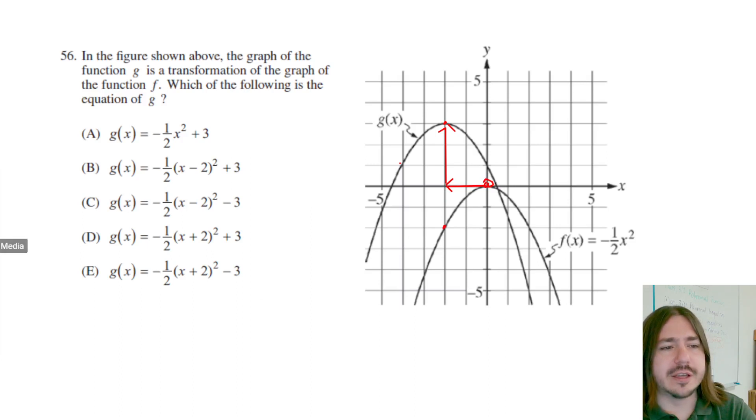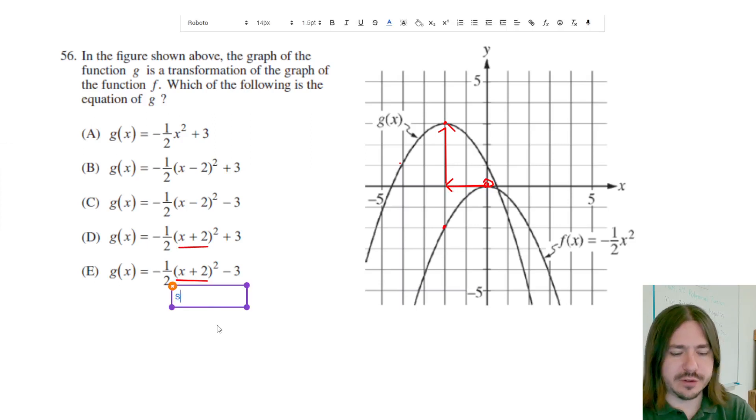When you shift to the left, you're actually going to be adding 2 to the x value. So we can see that we've got plus 2 and plus 2 here. Those both indicate a shift to the left 2 units.